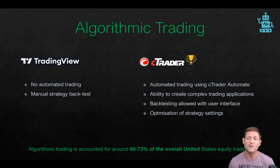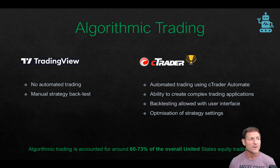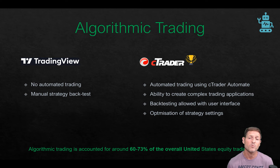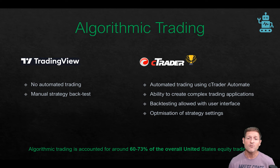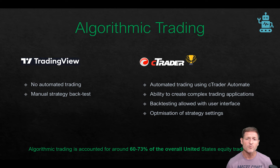Ctrader does have automated trading using Ctrader Automate. You can create complex trading applications, backtest your trading strategies over historical data, and also optimize your trading system's parameters so they're data-fitted with historical data, which increases the chances it will do well on future data. Algorithmic trading accounts for about 60% to 73% of overall trading in the United States — it's very popular right now. We're not talking about a system that just presses a button and makes money; we're talking about systems that help people trade and take away the boring tasks of waiting for signals.